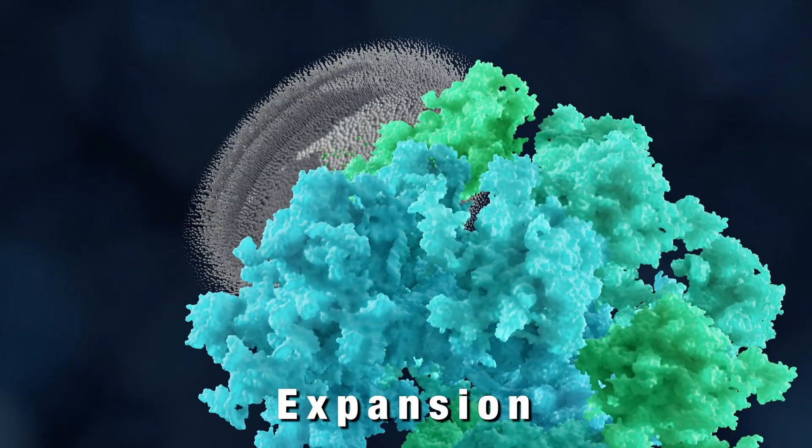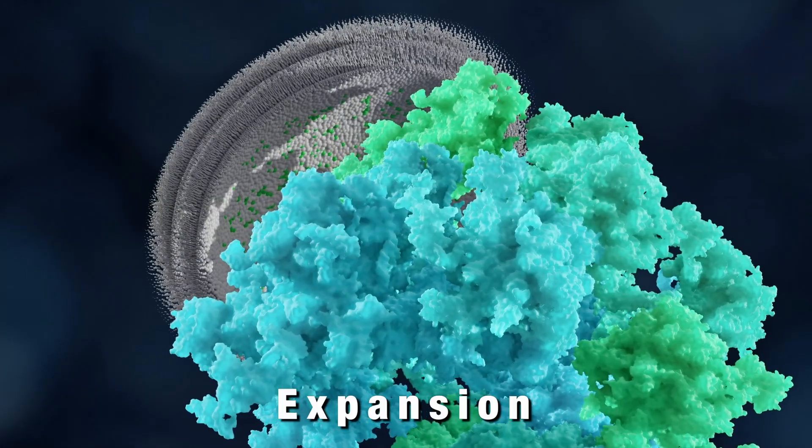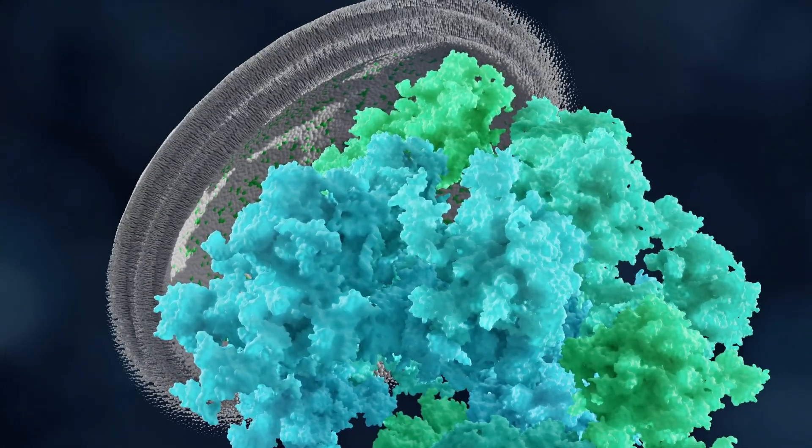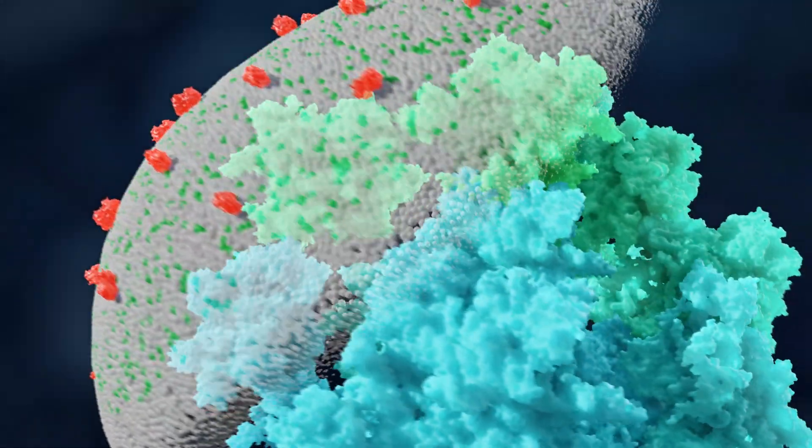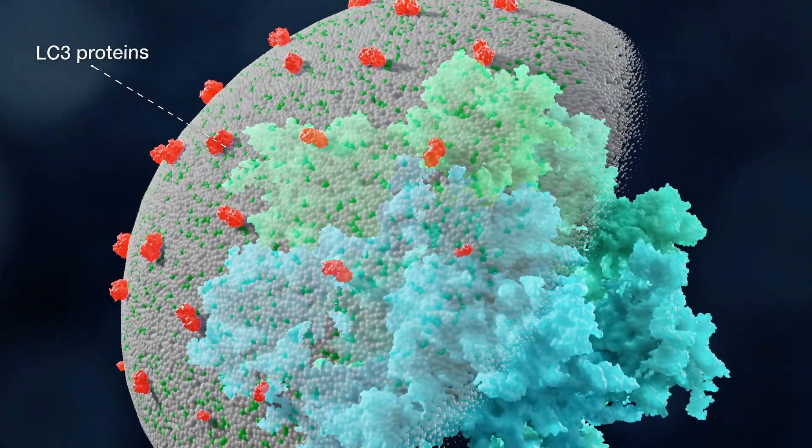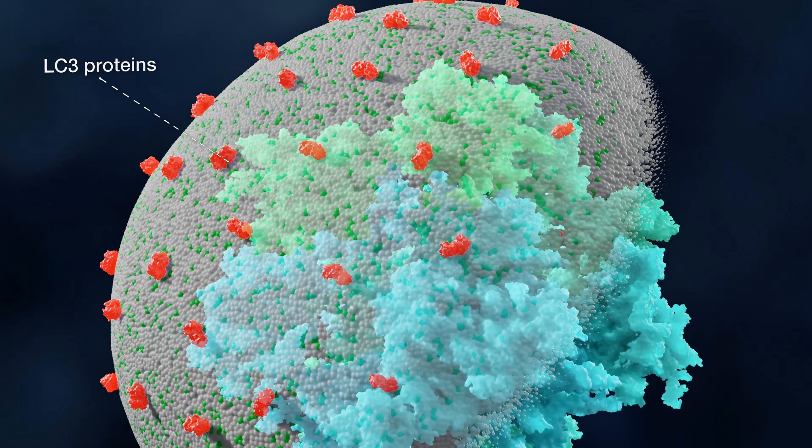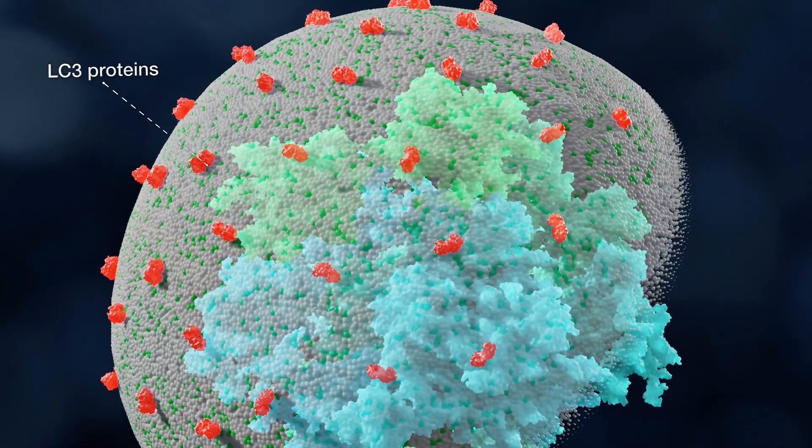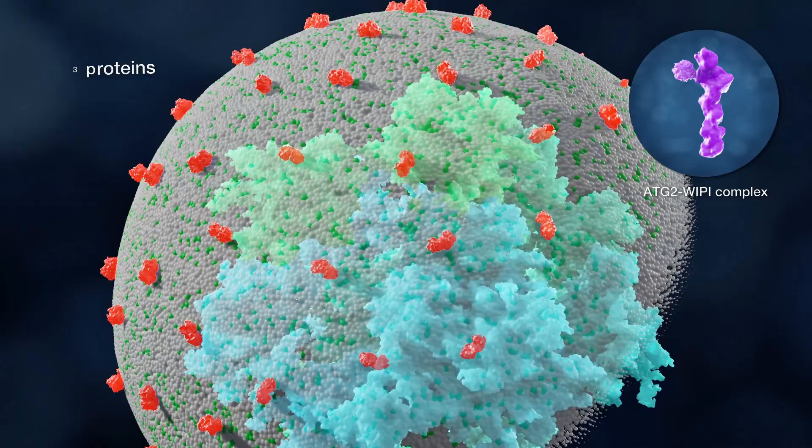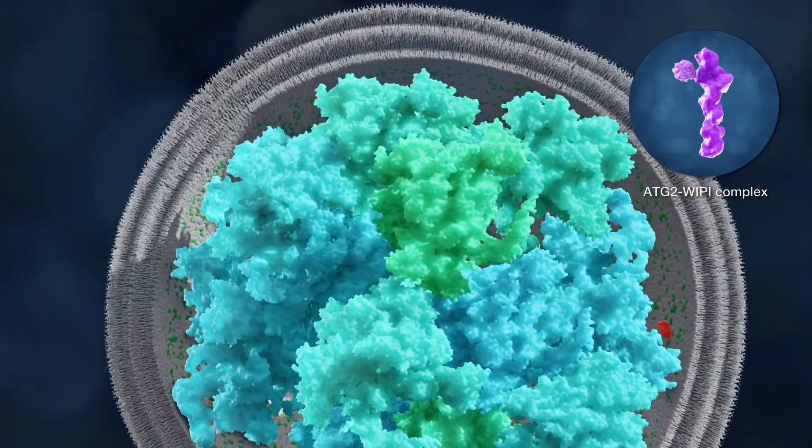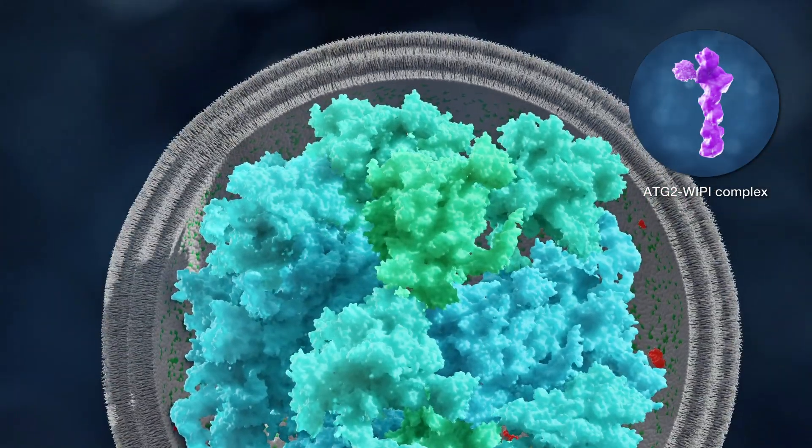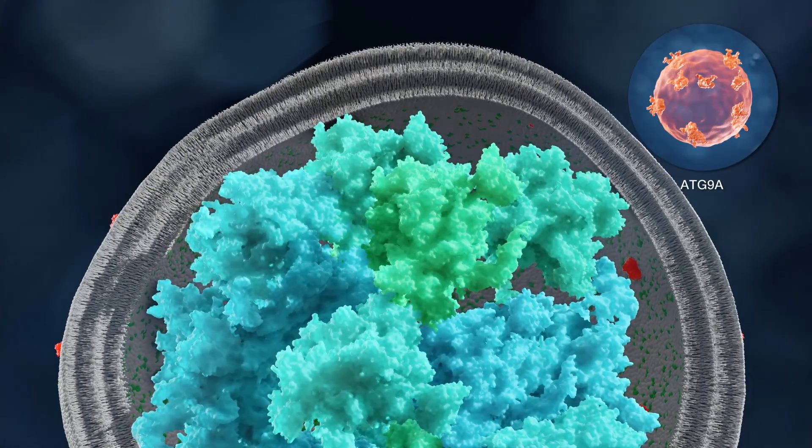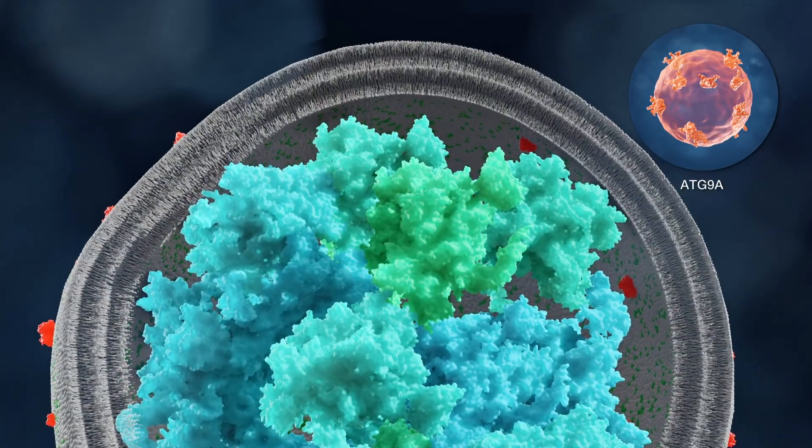The expansion step relies on the association to the phagophore of the ATG machinery components, such as the ATG2-VP complex and the ATG12 and LC3 conjugation systems that eventually conjugate the members of the ubiquitin-like LC3 protein family to the phosphatidyl ethanolamine present in the membrane of the growing phagophore. ATG2 proteins are key in supplying part of the lipids required for phagophore expansion through their direct transfer from the endoplasmic reticulum in conjunction with the ATG9A lipid scramblase activity.